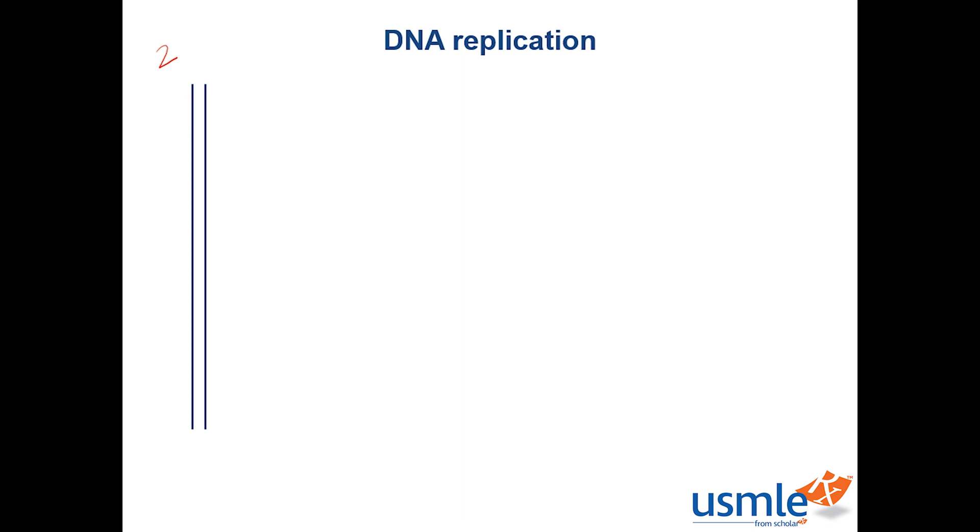So where do we start? Well, DNA replication starts in an area called the origin of replication, which is the center part here. And how many of these are there? In prokaryotic chromosomes there's only one, but eukaryotes have a bunch of them, which makes sense since eukaryotes have a lot more DNA to replicate.